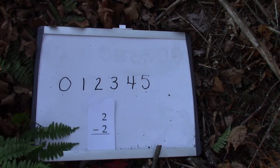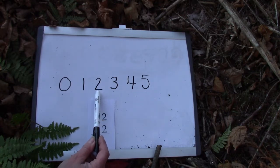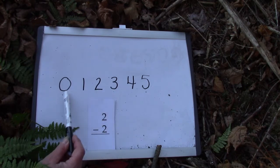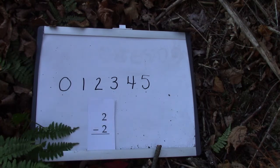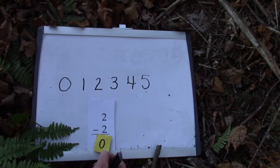Class, if we have two and we take two away, we can use our number line. Two take away one, two. Our answer would be zero. Two take away two is zero.